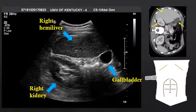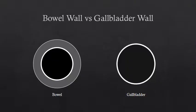Comparing that to the gallbladder, we see the gallbladder here on the right-hand side of our screen. The gallbladder has a single-layer hyperechoic wall. In a graphical representation, the bowel on the left has a hyperechoic outer serosal layer, a hypoechoic middle submucosal layer, and an inner hyperechoic mucosal layer, whereas the gallbladder on the right has a single hyperechoic layer.